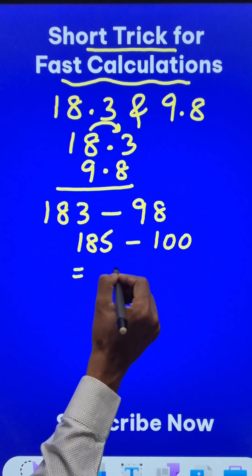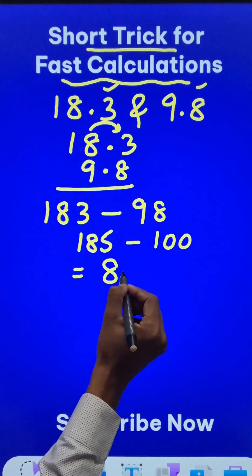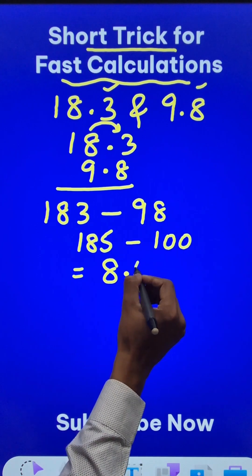So what is the difference now? It is 85. That's pretty easy and since we have one decimal place in both the numbers, your answer will be not 85 but 8.5.